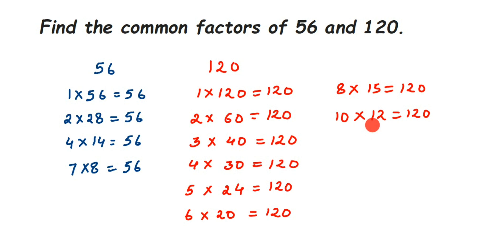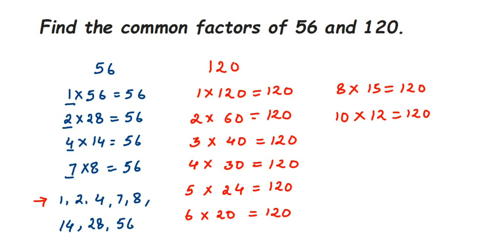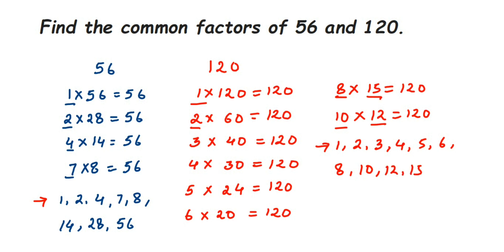Now let's write down the factors. The factors of 56 are: 1, 2, 4, 7, 8, 14, 28, and 56. The factors of 120 are: 1, 2, 3, 4, 5, 6, 8, 10, 12, 15, 20, 24, 30, 40, 60, and 120.